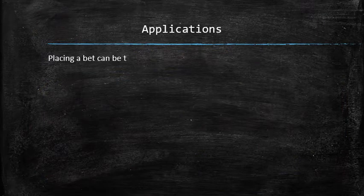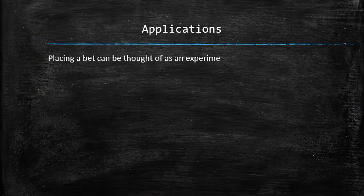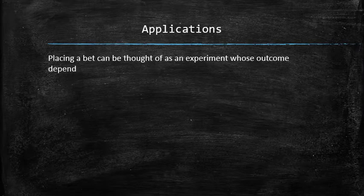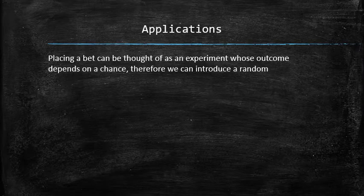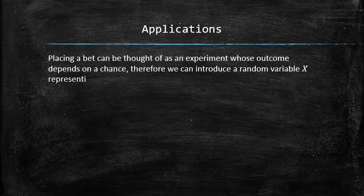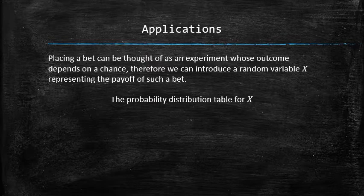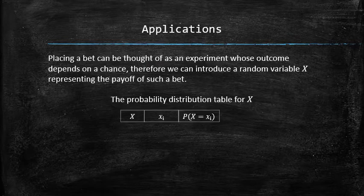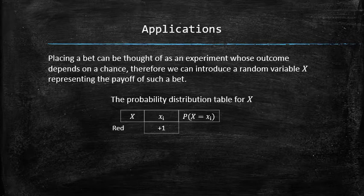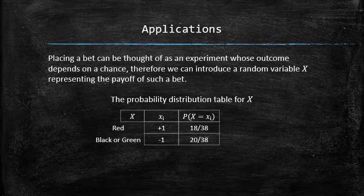Placing a bet can be thought of as an experiment whose outcome depends on chance. Therefore, we can introduce a random variable x that represents the payoff of such a bet. Then the following probability distribution table can be constructed for x by listing the possible values of x for winning and losing scenarios along with their probabilities.